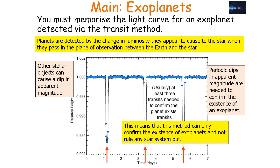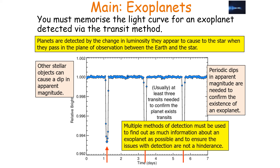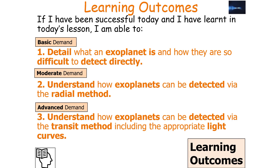This means the transit method can only confirm the existence of exoplanets and not rule out any star system. Multiple methods of detection must be used to find out as much information about an exoplanet as possible and to ensure the issues with detection are not a hindrance. We should now be able to detail what an exoplanet is, understand how exoplanets can be detected via the radial method, and understand how they can be detected via the transit method with appropriate light curves.